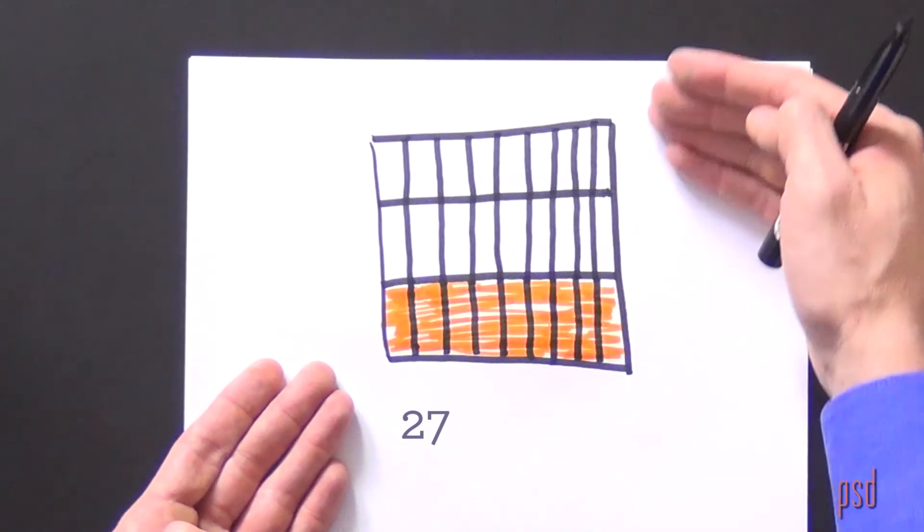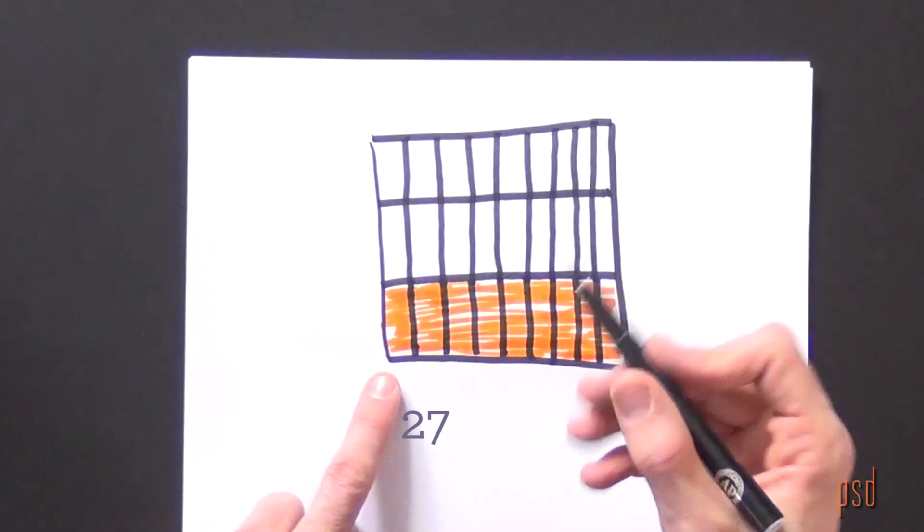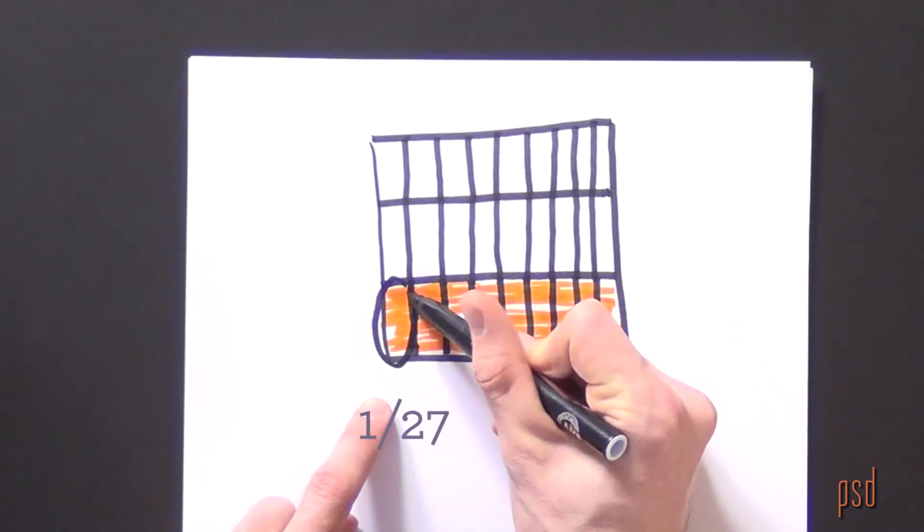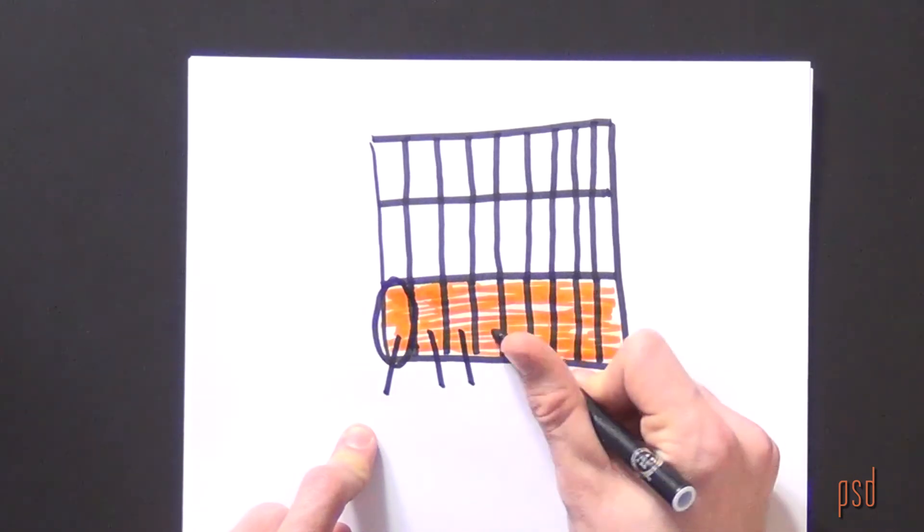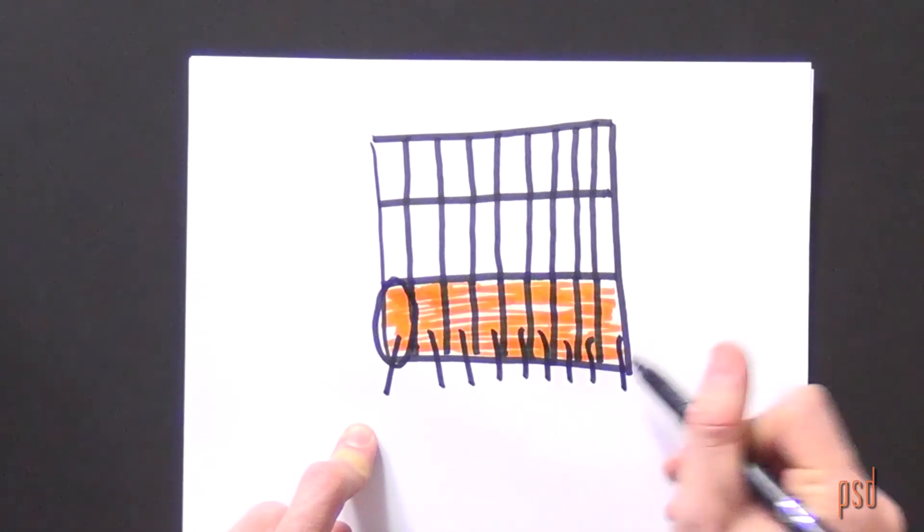So there are 27 total parts, and a student receives one of those parts. So this is one student, this is one student, three, four, five, six, seven, eight, nine students.